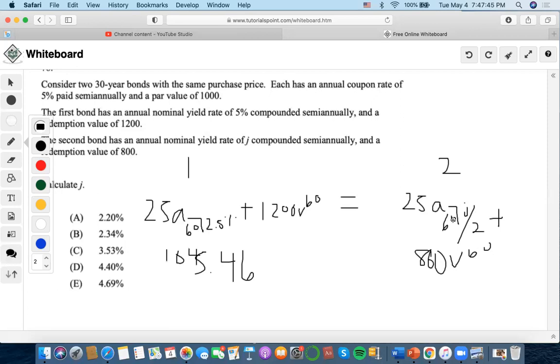$25 as the payment, 60 as the number of years, $800 future value. Compute interest rate. It's gonna be 2.20%.